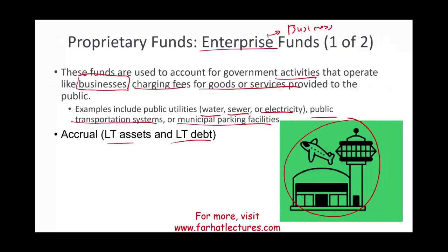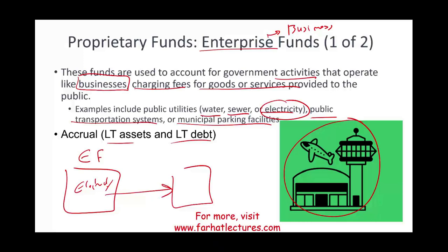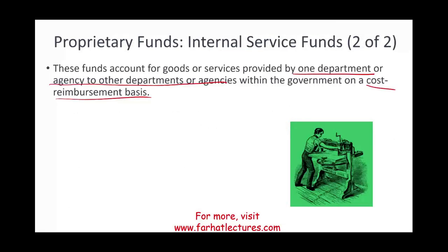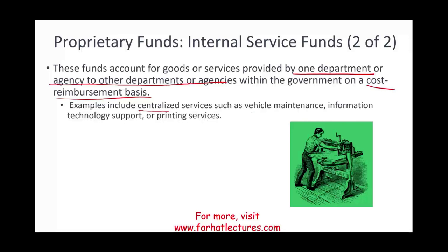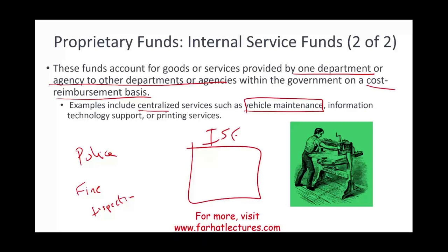For example, you could have the enterprise fund generating electricity, and then another agency using that electricity — we account for this through the Internal Service Fund, so you pay for those services. This includes centralized services such as vehicle maintenance. For example, the police department, the fire department, and the inspection department all have vehicles to maintain. You create an Internal Service Fund where all these vehicles are maintained — if they need to change tires or change oil, they go to this Internal Service Fund and pay on a cost reimbursement basis.